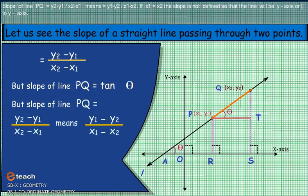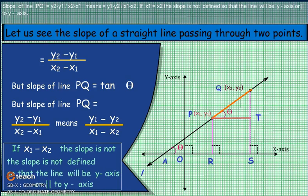Slope of line PQ = (y2 − y1) / (x2 − x1), which also equals (y1 − y2) / (x1 − x2). If x1 equals x2, the slope is not defined, meaning the line will be the y-axis or parallel to the y-axis.